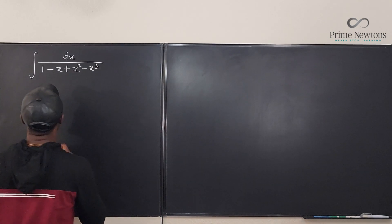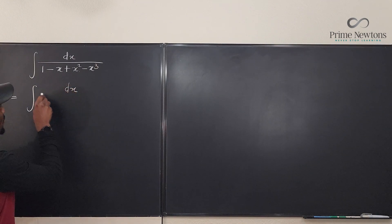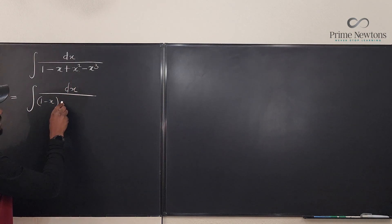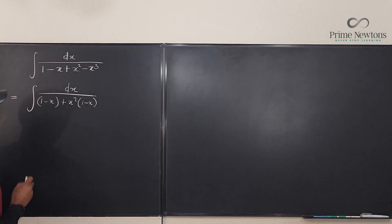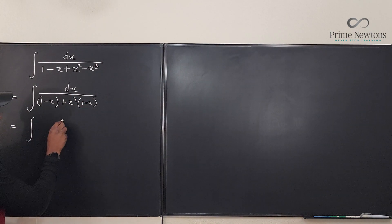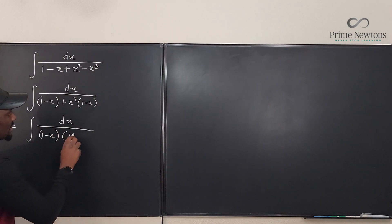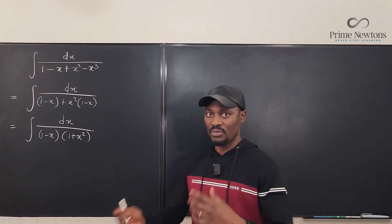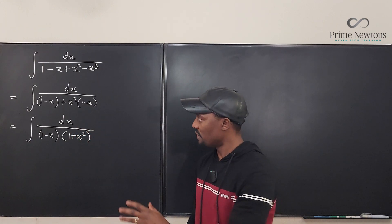So we're going to rewrite this as the integral of dx over — if I factor this — I'm going to have (1 - x) times, if I take out x squared, plus x squared times (1 - x). You see that? So this clearly becomes the integral of dx over (1 - x)(1 + x²). That is the factored form of the denominator. If you don't follow how that was factored, you may need to review your algebra or pre-calculus.